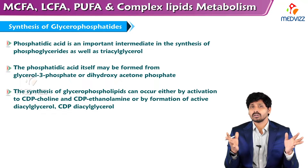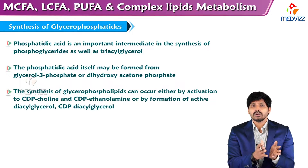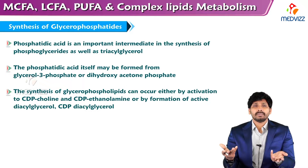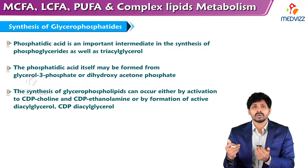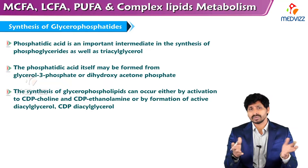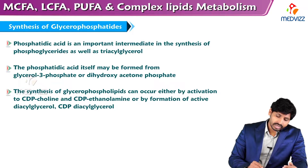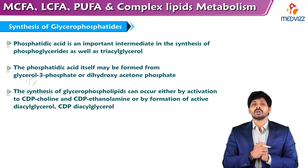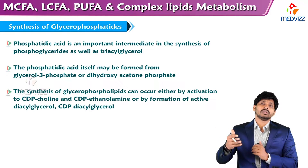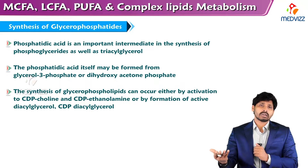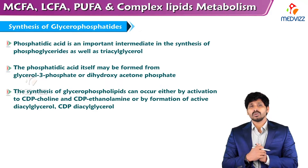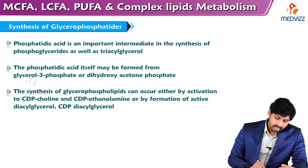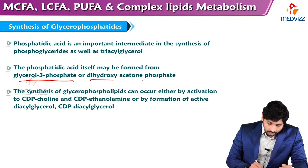Complex lipids are a combination of glycerol, fatty acid, and other substances such as nitrogen, phosphate, sulfur, or some other substance. That's why they are known as complex. Phosphatidic acid is an important intermediate: it has one glycerol and two fatty acids, with the third carbon of glycerol vacant where a nitrogen substance, amino acid, choline molecule, or carbohydrate-phosphate may attach. Phosphatidic acid itself may be formed from glycerol-3-phosphate or dihydroxyacetone phosphate.